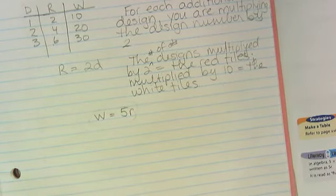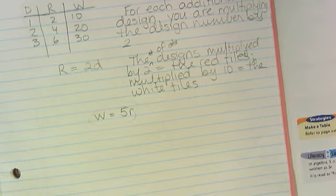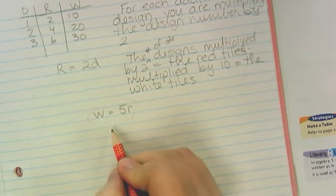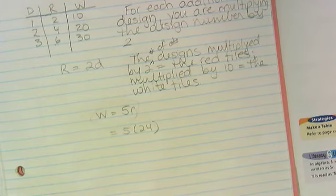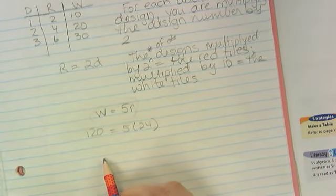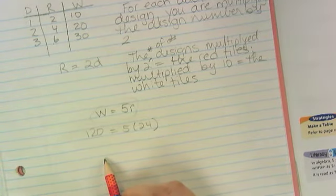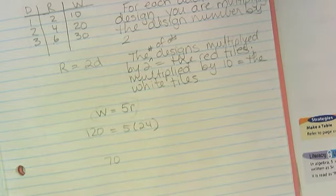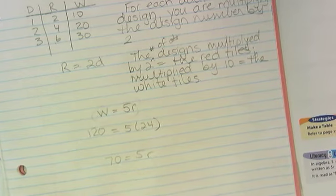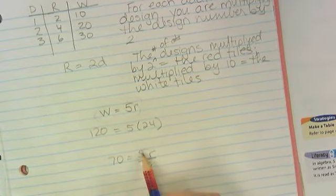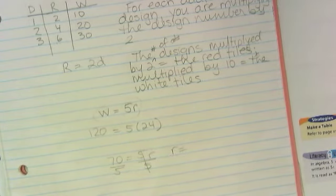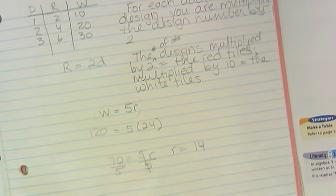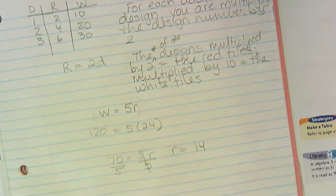So, if I buy twenty-four red tiles, how many white tiles do I need? One hundred and twenty. What about if I buy seventy white tiles? How am I going to figure that out? Good. This is it.